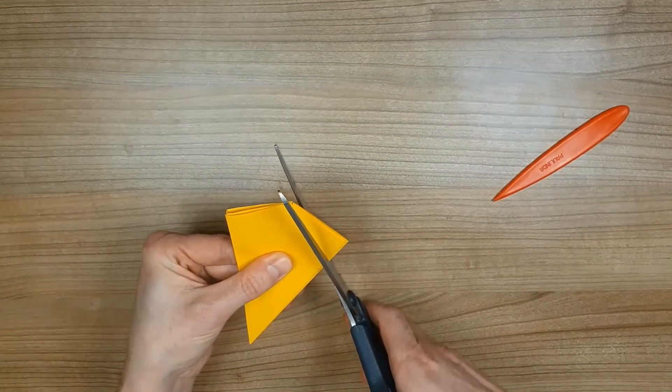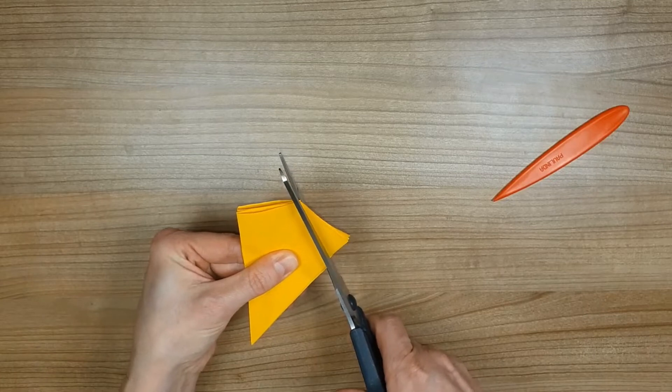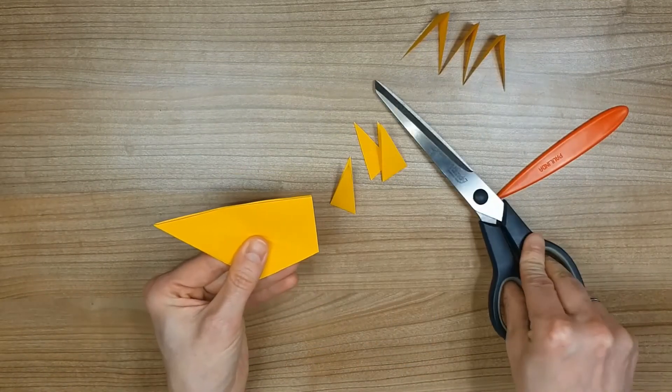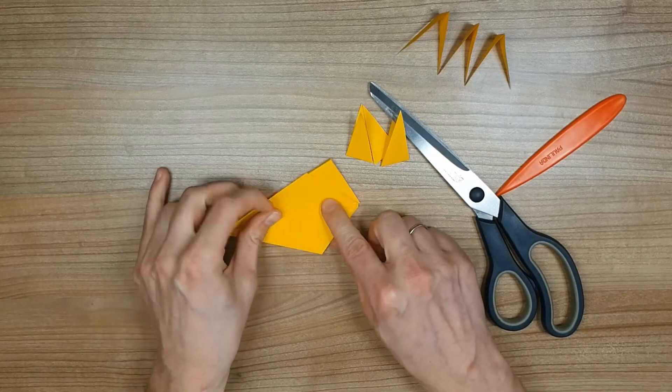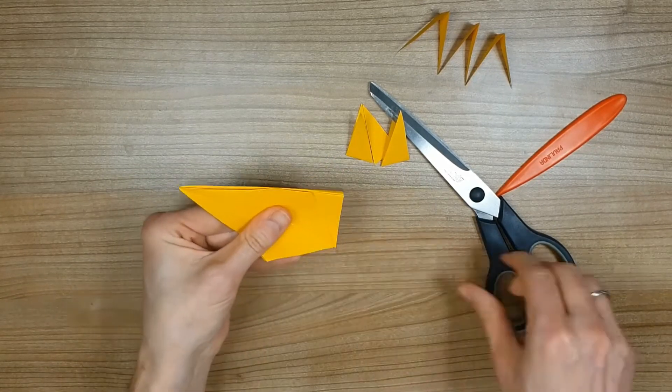To make the star shape, cut off a bit from the side to the center bottom. You can fold one side back to make sure that the cut is the same on both sides.